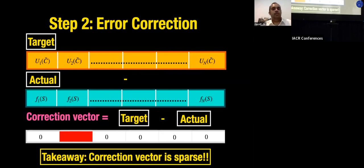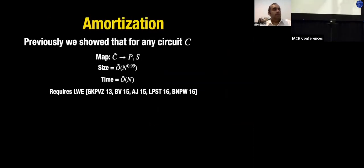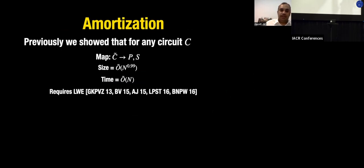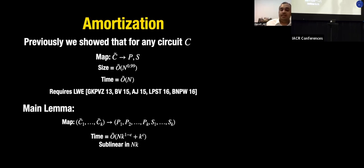However, there's a problem: the time to pre-process the public and secret parts is still capital N, because computing the difference and compressing it requires going over every input. Additionally, this approach requires LWE if you want to make it work directly. The key insight of this paper is that if we want to do this for many circuits simultaneously — say k circuits — we can amortize in k.